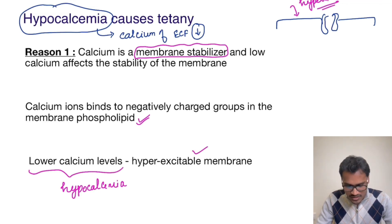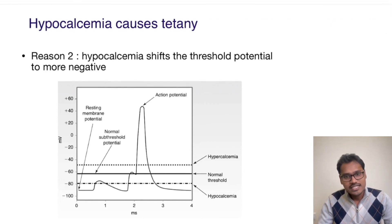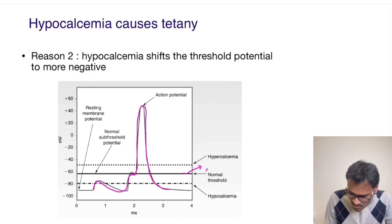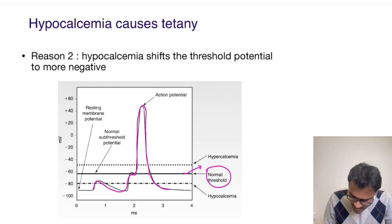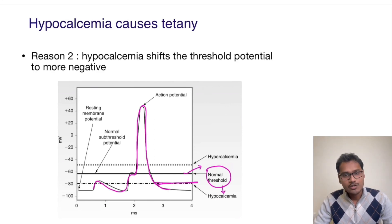There is another reason which has been shown in studies, which is the threshold. The threshold level to excite a cell has itself come down. For example, here they have shown an action potential, and the bold line shows the normal threshold. When studied in hypocalcemic patients, the threshold has reduced — it has become more negative. If it has become more negative, it means the cell is hyperexcitable. That is the reason for hypocalcemia causing tetany.